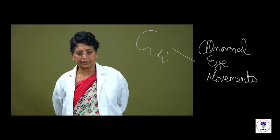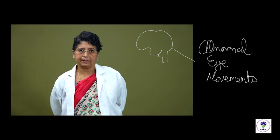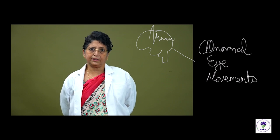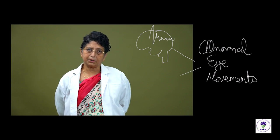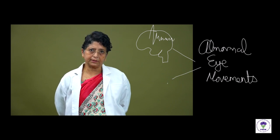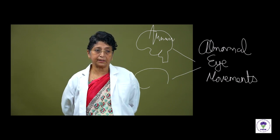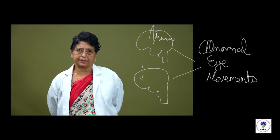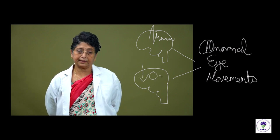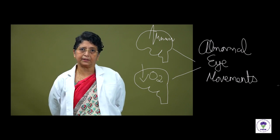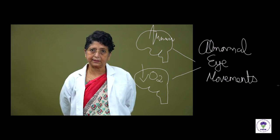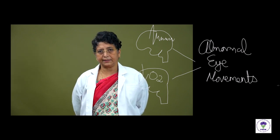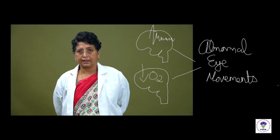Number one, it is triggered by electrical activity in the brain — that is, seizure activity. Number two, it has been noted in children presenting in pre-terminal cardiorespiratory failure; that is, a significant oxygen deficit can also trigger these seizure-like movements in the eyes.